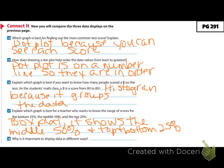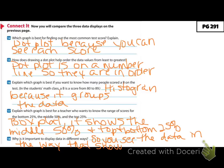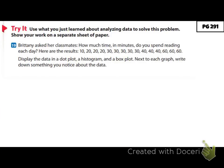Number 18: why is it important to display data in different ways? You can see the data in the way that shows the information you want. Now use what you just learned — go through and make a dot plot, a histogram, and a box plot for the data in this set. Once you're done, come check with me and I will show you what they should look like.